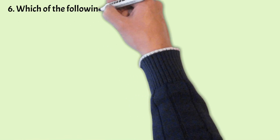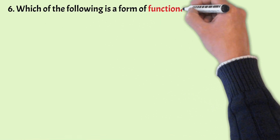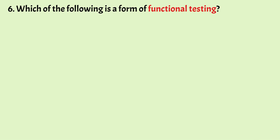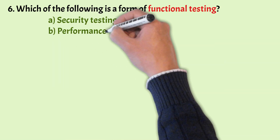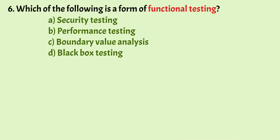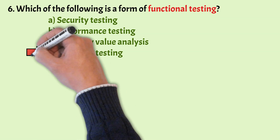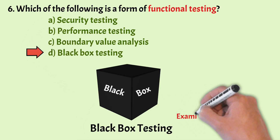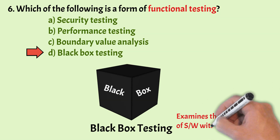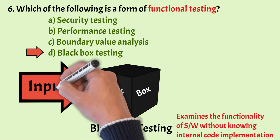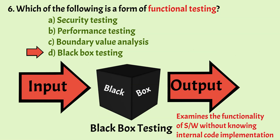Next question: Which of the following is a form of Functional Testing? Options: Security Testing, Performance Testing, Boundary Value Analysis, Black Box Testing. The correct answer is Option D, Black Box Testing. Black Box Testing examines the functionality of software without knowing internal code implementations — it mainly focuses on input and output of the software.